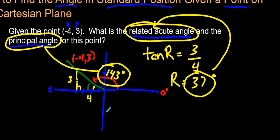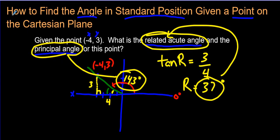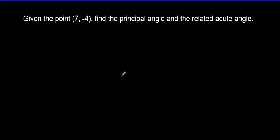And that's all we need to do. Now, I could sign off and say there you go, but let's just do one more bonus question just in case you have a few questions still about this yourself. Given the point (7, -4), find the principal angle and the related acute angle. Here we go.